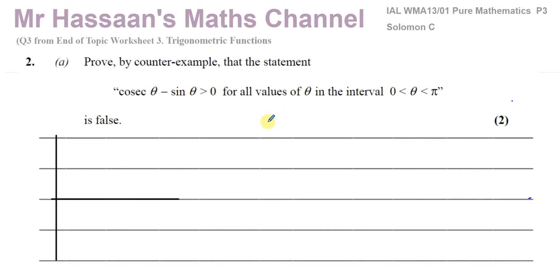Proof by counter example is when you find one situation or one example which causes the statement to be proved false. So in this case, if I find one value of theta between zero and pi which makes this statement false — where cosec of that angle minus sine of that angle is not greater than zero — then I've proved it to be false. One of the easiest ways to think about this is to look at the sketch of these two curves: cosec theta and sine theta between zero and pi.